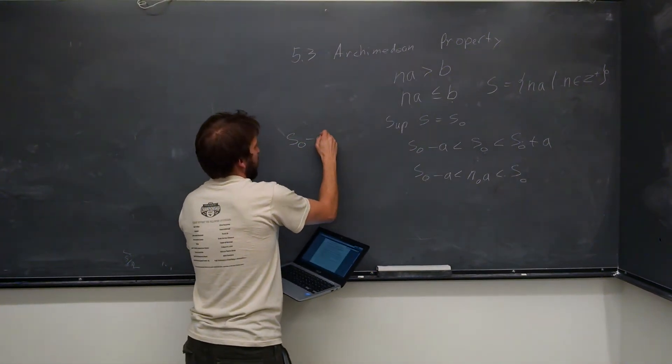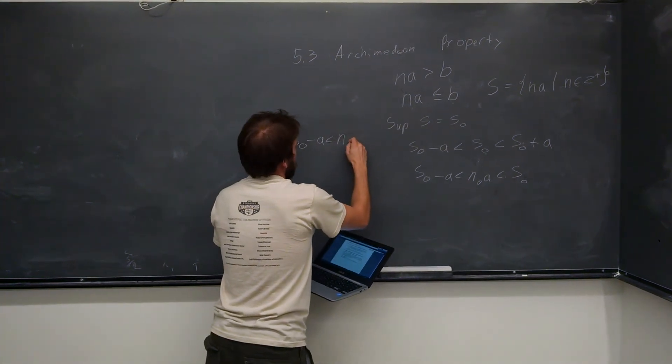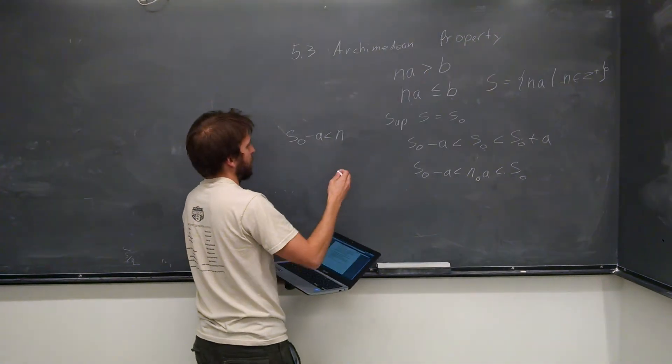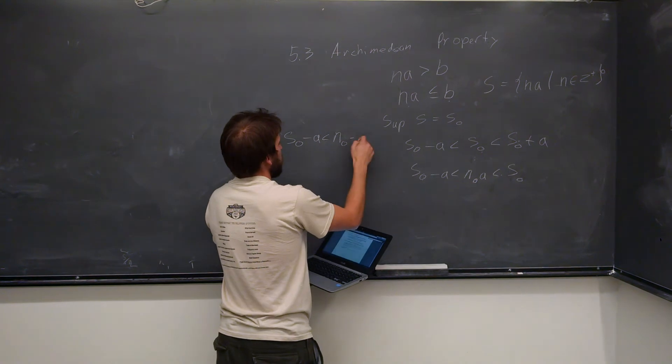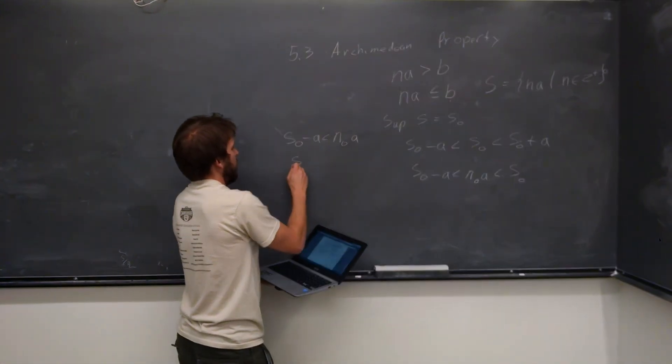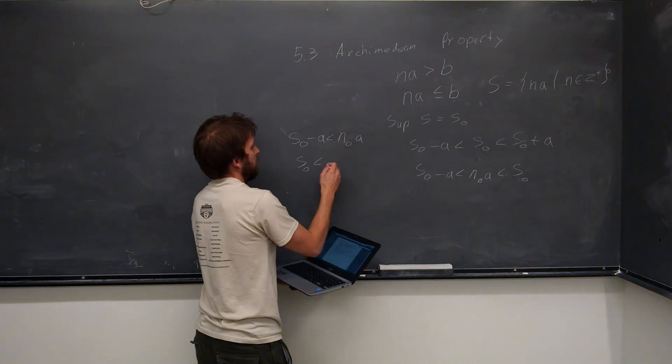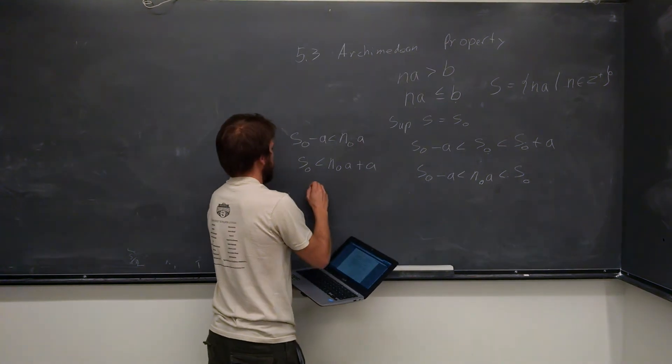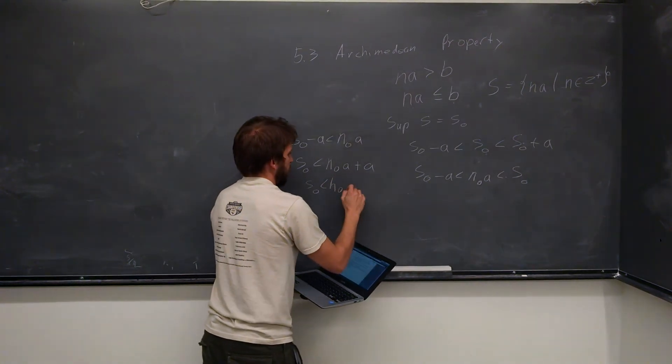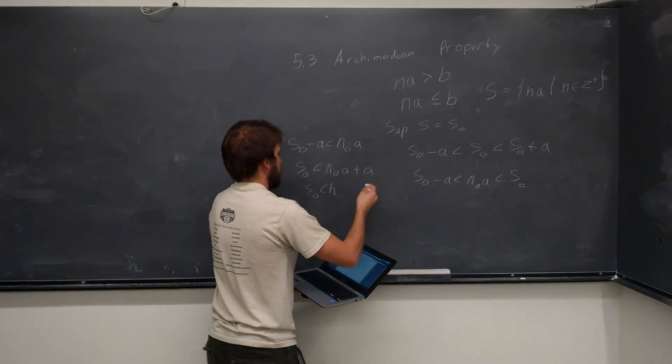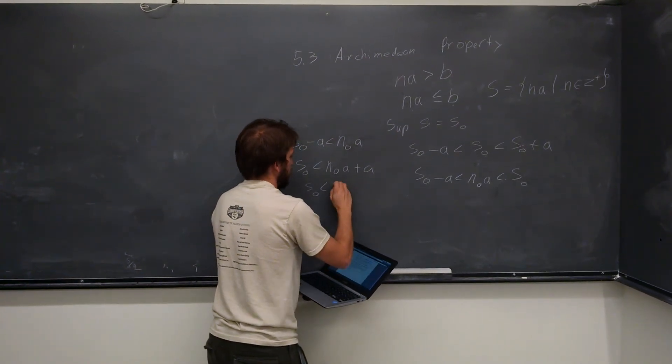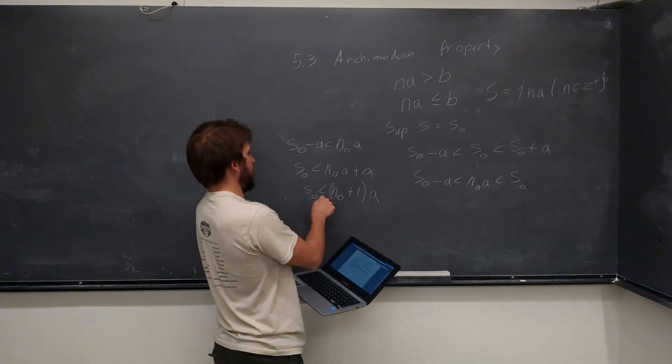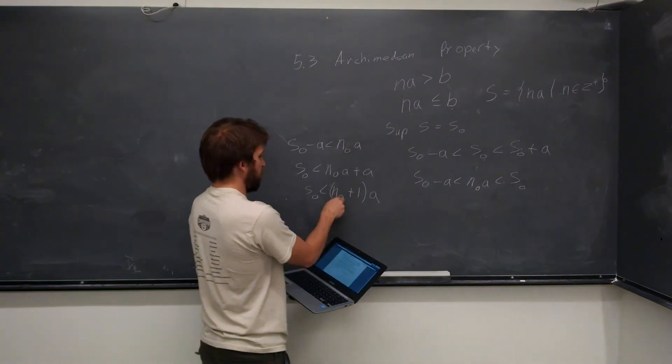Let's see what we can do with that left side of the inequality. There is some N-naught for which that's true. So now we have S-naught minus A is less than N-naught times A. We're going to add A to both sides and get N-naught times A plus A. Then we factor out our A, where we have N-naught plus 1 times A, and we have that this is greater than S-naught.